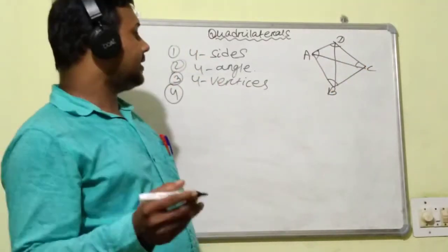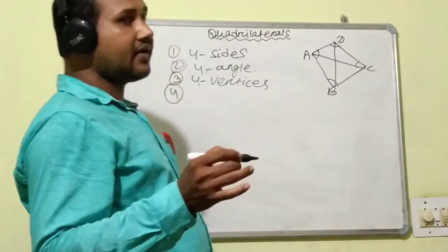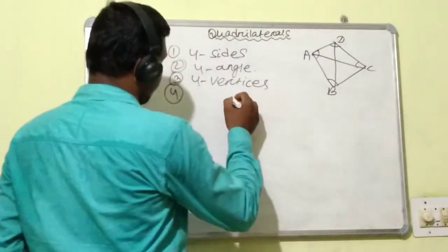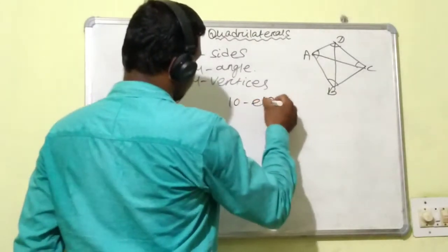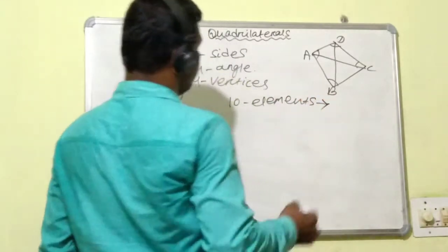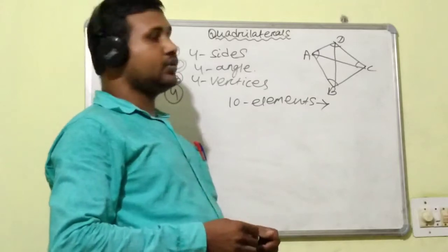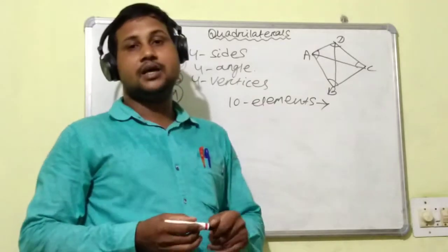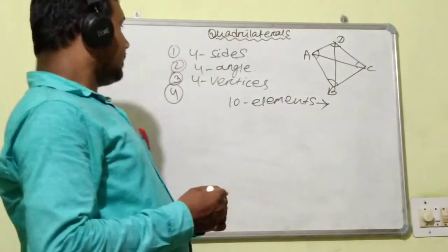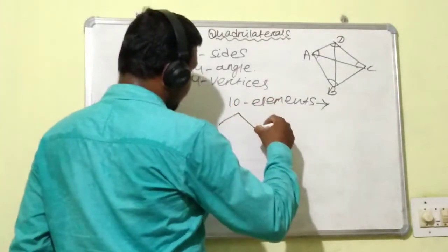So finally, we will have to remember that quadrilaterals have ten elements: that is four sides, four angles, and two diagonals. Next, we will discuss another variety of quadrilaterals.